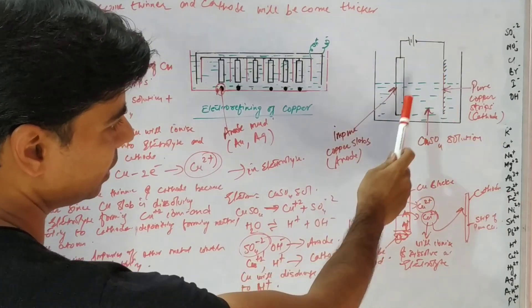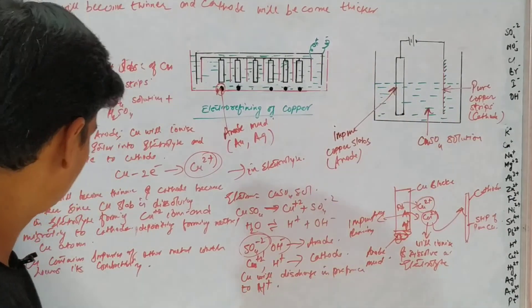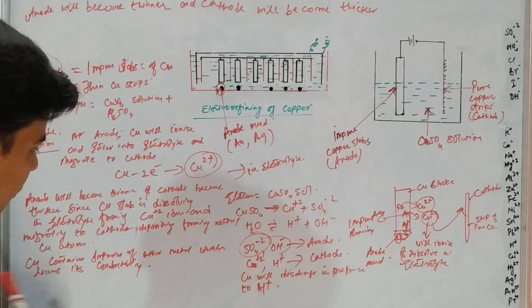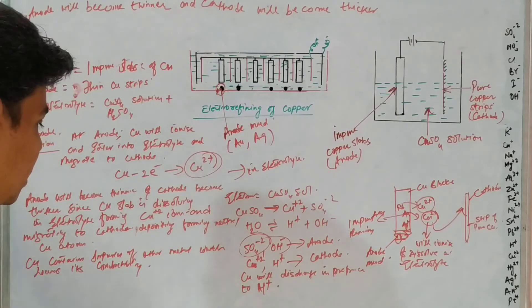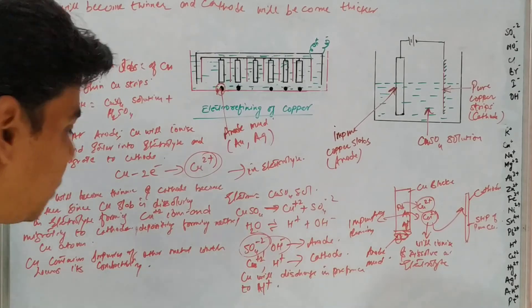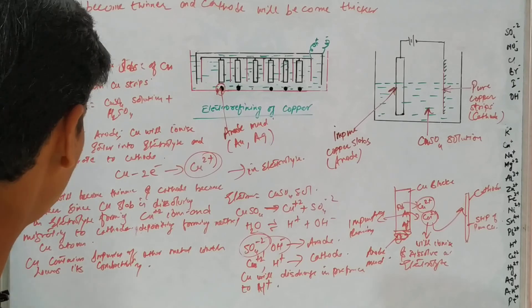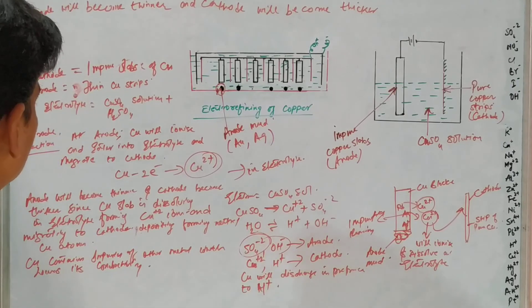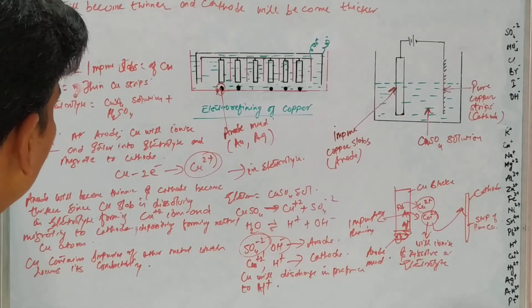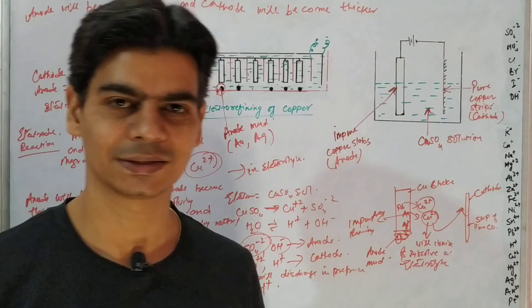Remember the electrode reactions and the reason why the cathode becomes thick and the anode becomes thin. Copper is used in electrical transmission, and we need to remove all the impurities. I hope all this is clear — thanks.